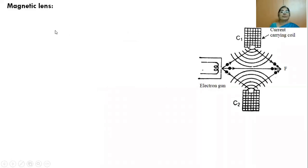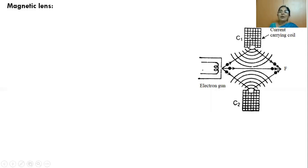Next, let us see how a magnetic field works as a lens. A coil carrying current is enclosed in an iron cylinder with a hole. Another coil carrying current is enclosed in another iron cylinder, also with a hole. When current flows through the coil, it produces a magnetic field. Iron, being magnetic, holds the magnetic flux lines. One coil with current in one direction forms the north pole, and the other with current in the opposite direction forms the south pole.